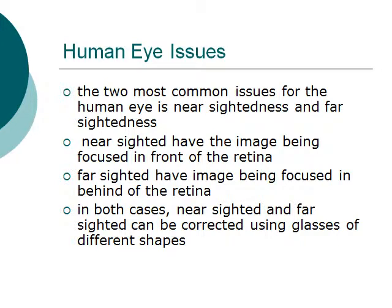Human eye issues: the two most common issues with the human eye are near-sightedness and far-sightedness. Near-sightedness means the image is focused in front of the retina, whereas far-sightedness means the image is focused behind the retina. In both cases, near-sightedness and far-sightedness can be corrected using glasses of different shapes.